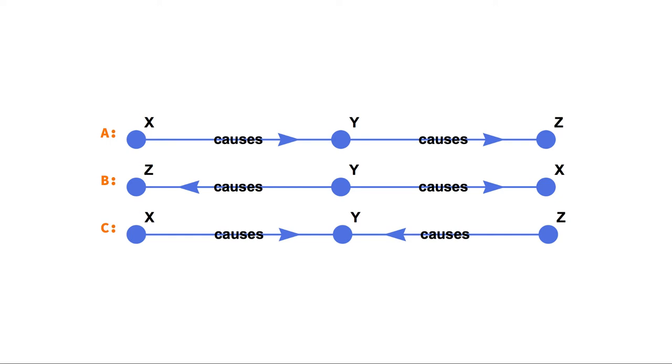In the first case, labelled A in orange colour, the event x is the cause of event y and y is the cause of event z, but x is said to be an indirect cause of z. In general, we are of course always more interested in direct causes because almost anything can be an indirect cause of anything else. In the second case b, an event y is direct cause of both z and x. And finally, in case c, the event y has two causes, x and z.